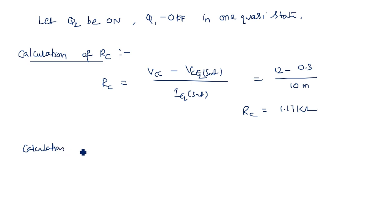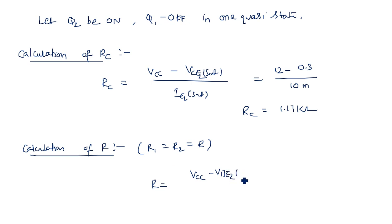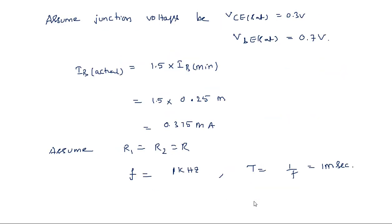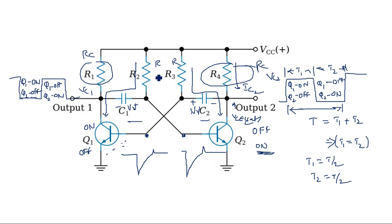For the calculation of R (where R1 = R2 = R): R = (VCC − VBE_sat) / IB2_actual. Looking at the circuit diagram, with Q2 in the on state, the current through R flows from VCC through VBE2 to the base of transistor Q2, which is in saturation, and the current is IB2_actual.